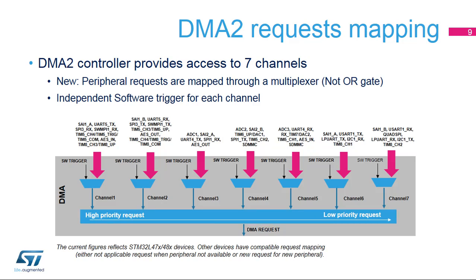The DMA2 controller also provides access to seven channels with independent multiplexers for each channel. Some of the peripheral requests are similar to DMA1, but there are unique peripheral requests as well.